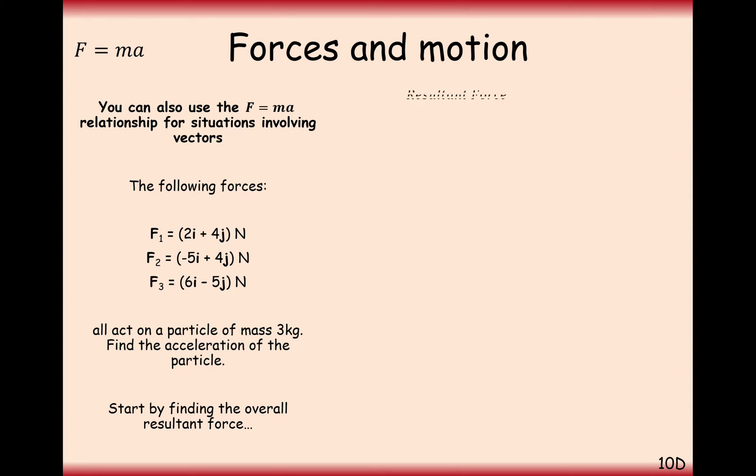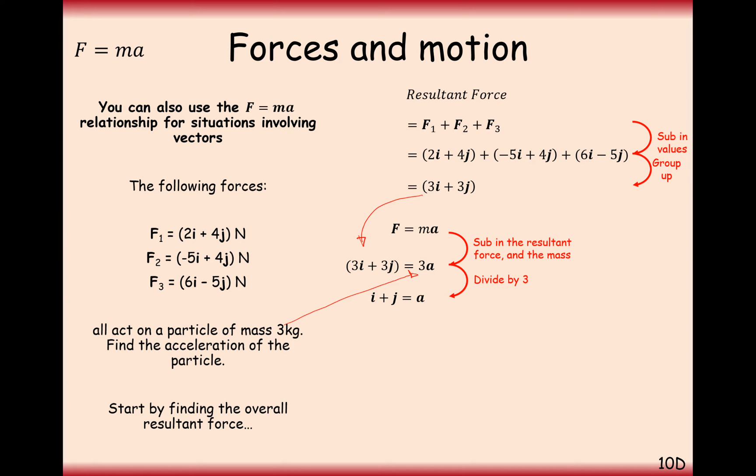Well, first thing what we'd want to do here is find the overall force when we sum up them together. So adding these forces together, and we get 3i plus 3j. And we want to find the acceleration on a particle of mass 3 kilograms. So F equals ma. And the reason they've appeared in bold this time here is to signal that these are our two-dimensional vectors. So substitute them in, 3i plus 3j from the resultant vector. m is 3, and a is what we want to find out. So divide both sides by 3, and we get i plus j equals a. So it's i plus j meters per second squared.